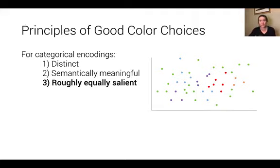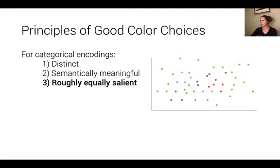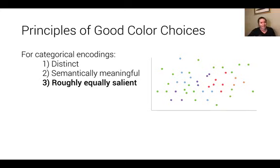We don't know if people are going to look at the blues, oranges, reds, or greens equally. So if we turn down the brightness and make each of our points roughly equally salient — increase the transparency, mute the red points a little bit — then we find ourselves in a situation where people are more likely to ascribe equal visual weight to all the different categories in our data.